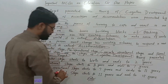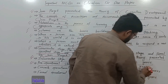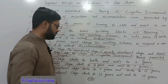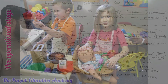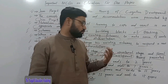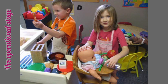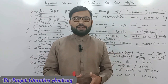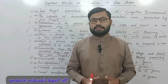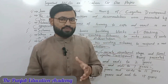The Pre-Operational Stage starts at two years and ends at seven years. Semiotic functions, increase in vocabulary, language development, egocentrism, and animism are the key features of this stage.